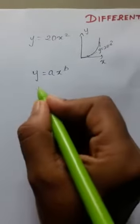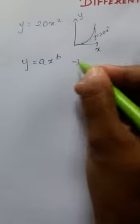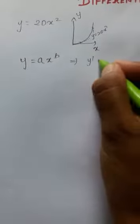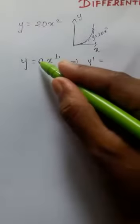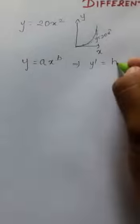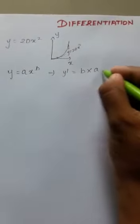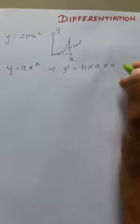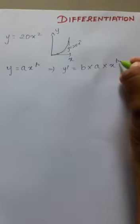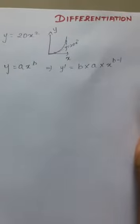So the derivative of this will be written as y dash equals to the power b comes to the front, so b into a into x to the power b, and the power will be reduced by 1, so minus 1.